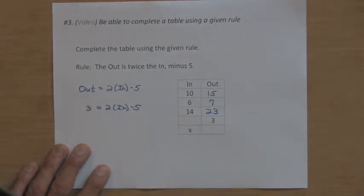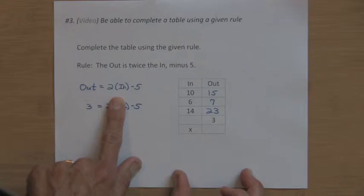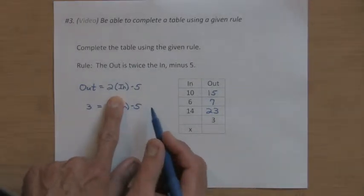The only way that's going to be possible, if I cover this part up, something minus five has to be three. So the part that's under my finger has to be worth eight, because eight minus five is going to give me three.